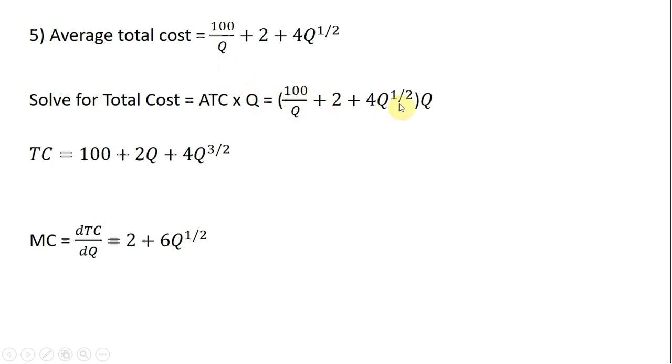So in parentheses here is our average total cost, and I'm going to multiply that through by Q, the quantity of output. So Q times 100/Q leaves us with 100. 2 times Q leaves us with 2Q. And then finally, 4Q^(1/2) times Q is just 4Q^(3/2). We're just adding the exponents here.